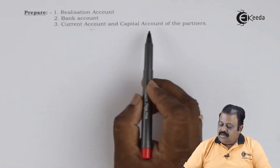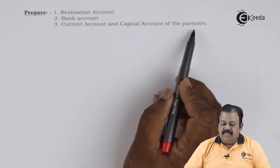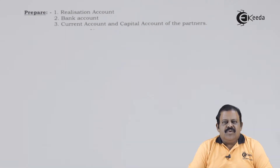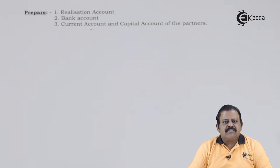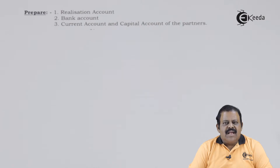In this case we need to understand one important point. When partners' capital accounts as well as current accounts are given, we have one option: we can open only the partners' capital account, and the balances of the partners' current accounts will be directly transferred to the partners' capital account. All adjustments relating to dissolution will then be recorded in the partners' capital account. Since it is a time of dissolution, there is no point in keeping both accounts separate.